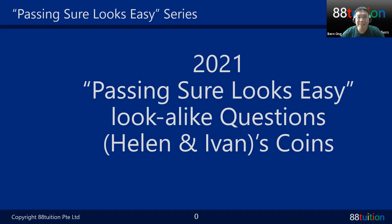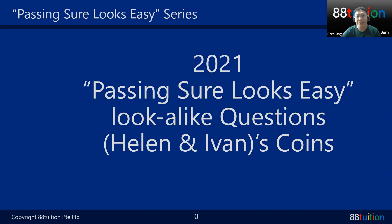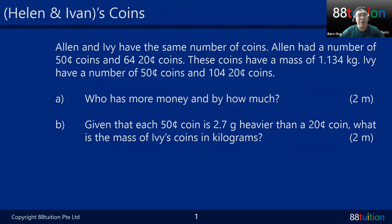Hey everybody, this is Bern Ong from idiot tuition. We'll be discussing the Helen and Ivan question from the 2021 PSLE math paper. I changed the question a little bit to avoid copyright issues, so instead of Helen and Ivan we have Alan and Ivy — one boy, one girl, same same.